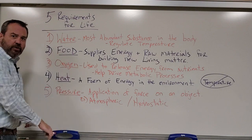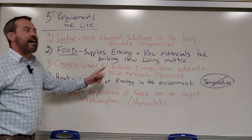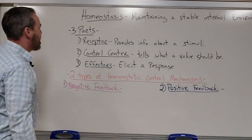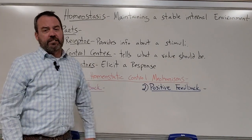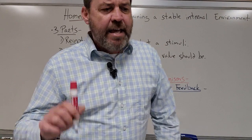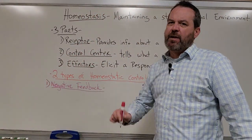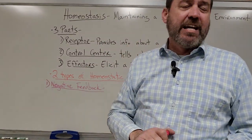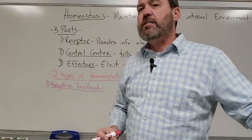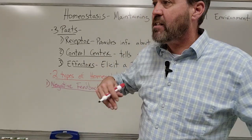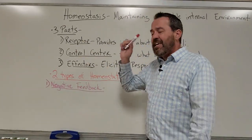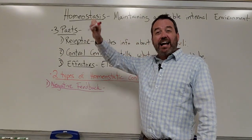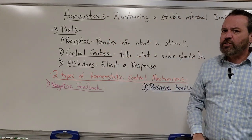So know the five requirements for life and be able to list those with a brief definition for each one. The next concept for chapter one is homeostasis — defined as maintaining a stable internal environment. That means all of the stuff running in the background of your brain: the stuff you don't have to think about — releasing hormones, controlling blood pressure, releasing digestive enzymes, absorbing nutrients — all of that background activity your brain controls without you thinking about it falls under homeostasis.